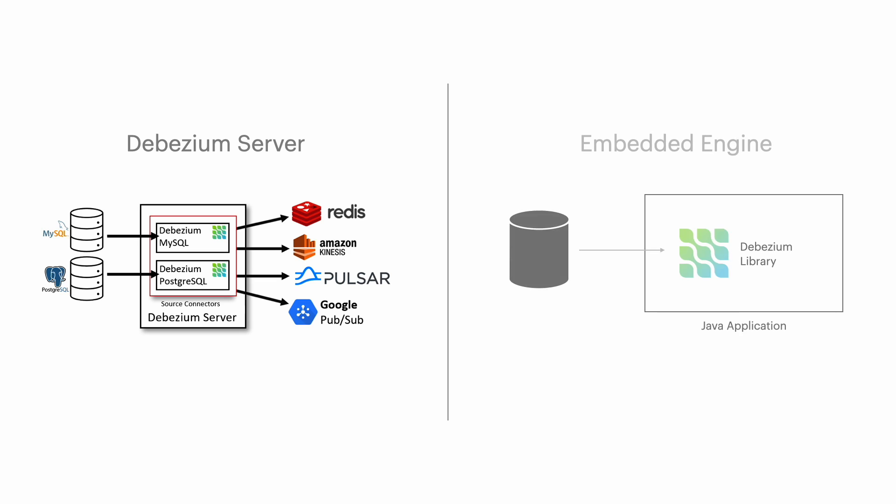Alternatively, you can use the embedded Debezium engine. That way, you can run Debezium source connectors as a library embedded into your custom Java applications. This becomes practical if you want to consume change events within your application itself without deploying Kafka clusters or other messaging systems.